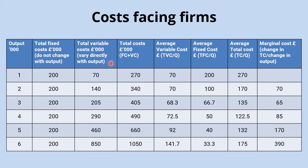That's in contrast to the next column, variable costs, which are costs that do vary directly with output — so the more output you produce, the higher your variable costs are going to be. Think raw materials: the more units of output you produce, the higher your variable costs go. To get your total costs you simply add fixed costs to variable costs, so fixed costs plus variable costs is your formula for calculating total cost.